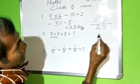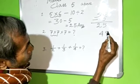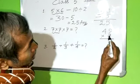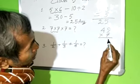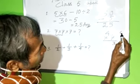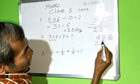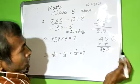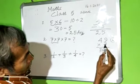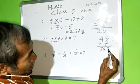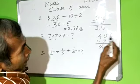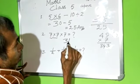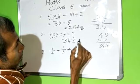7 into 7 is 49. 49 into 7: 63, 3, 6 in balance. 3, 4, 3. 28 plus 6 is 34. Therefore 343, this is the answer.